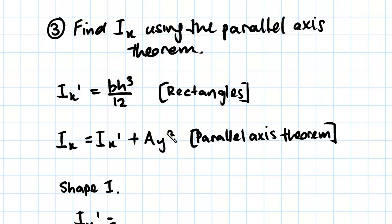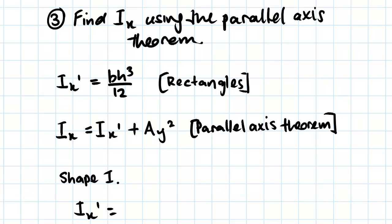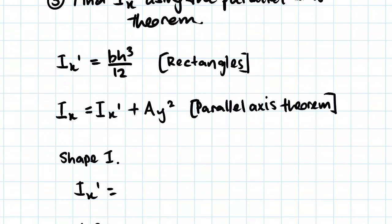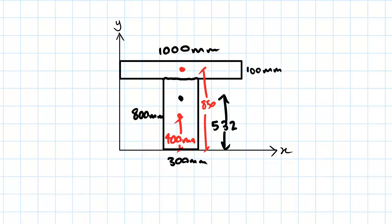So we're going to first look at shape one. We work out Ix' for shape one. If we just look at the question, this one here down the bottom, this was shape one. We're going to be working out Ix for this shape.